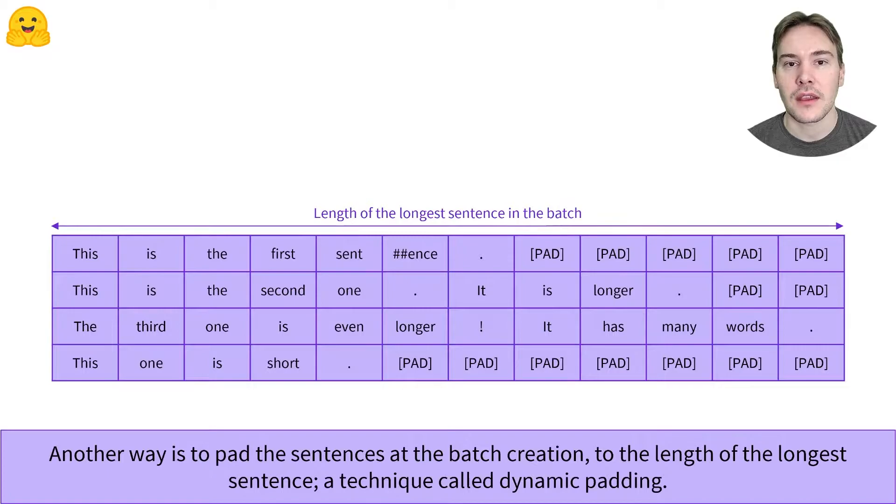To avoid this, another strategy is to pad the elements when we batch them together, to the longest sentence inside the batch. This way, batches composed of short inputs will be smaller than the batch containing the longest sentence in the dataset.